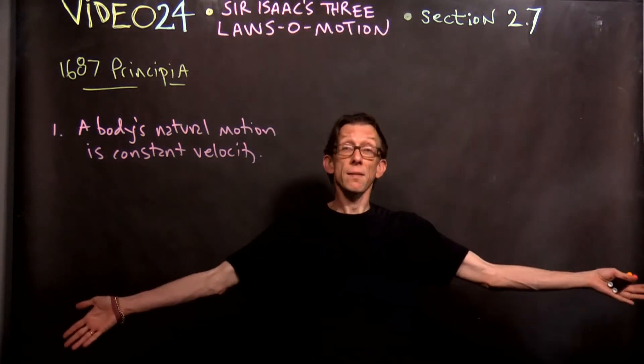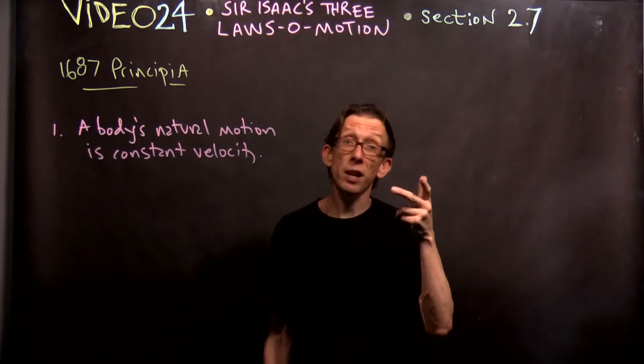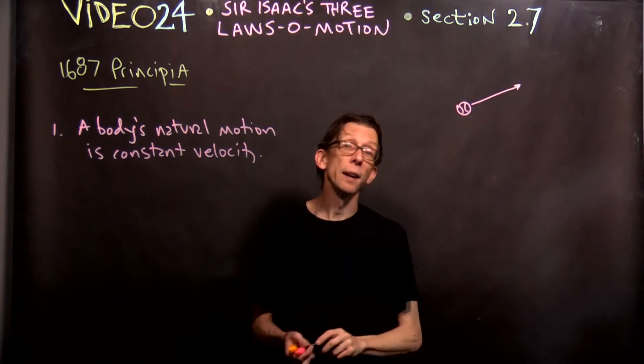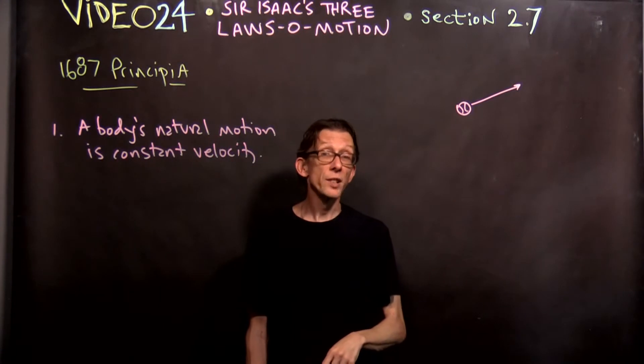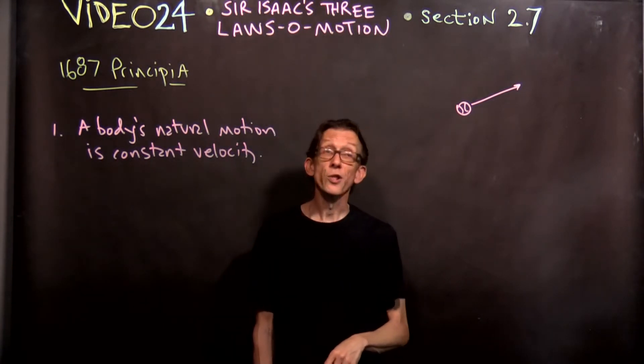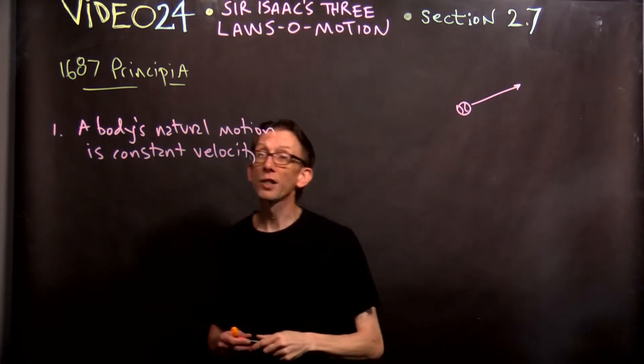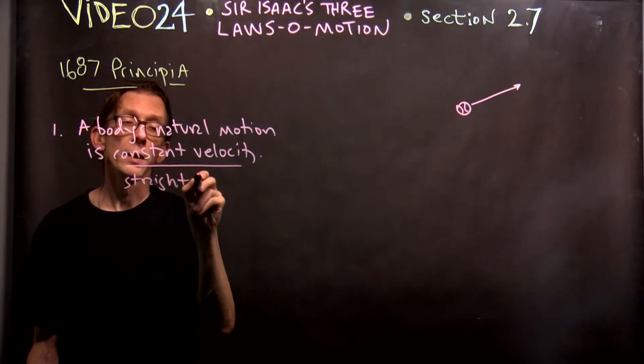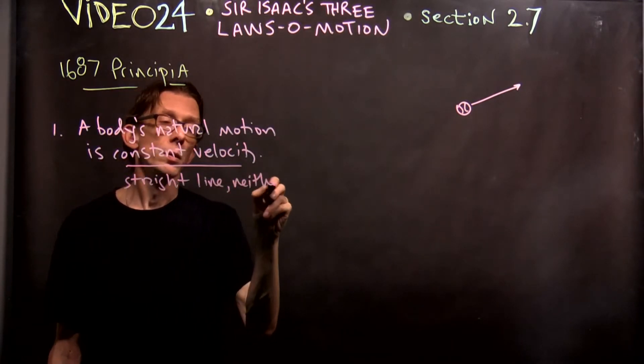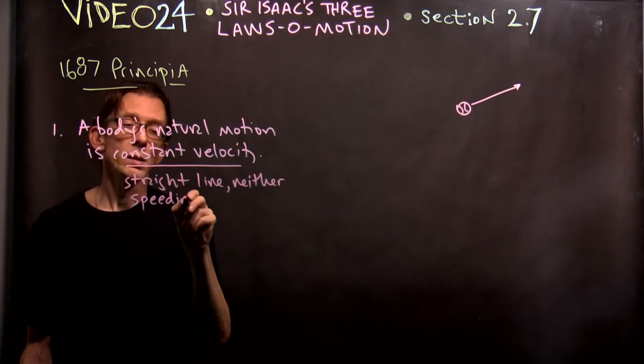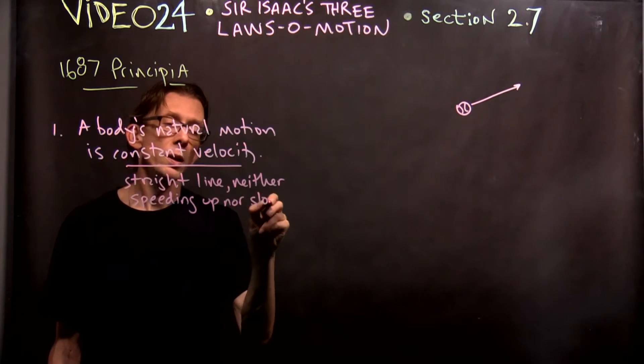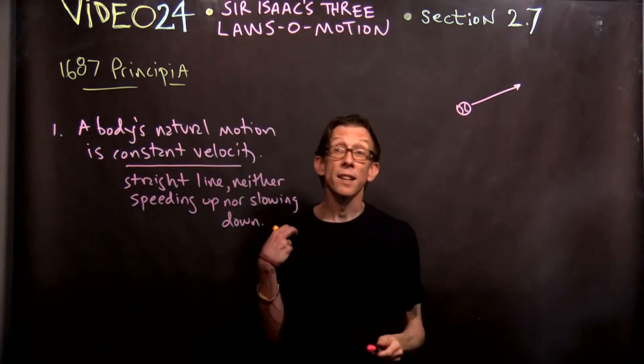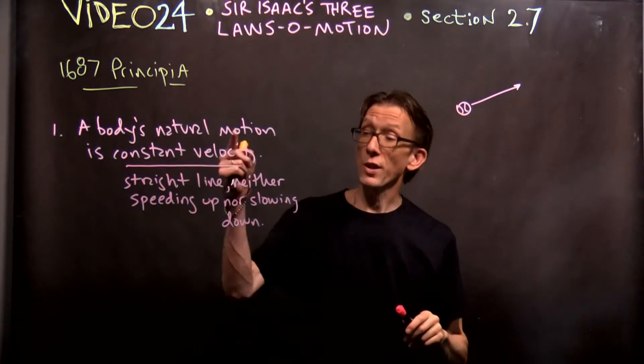For example, suppose we go out into space. This is astronomy. So, suppose we go out into space, and we take an object, say a baseball, and we just throw it. That baseball is going to move in a straight line at constant speed, not speeding up, nor slowing down, or changing direction. It's just going to go in a straight line. Constant velocity, what this means for us is straight line, neither speeding up, nor slowing down. Now, that is a body's natural motion. Straight line motion, neither speeding up nor slowing down.